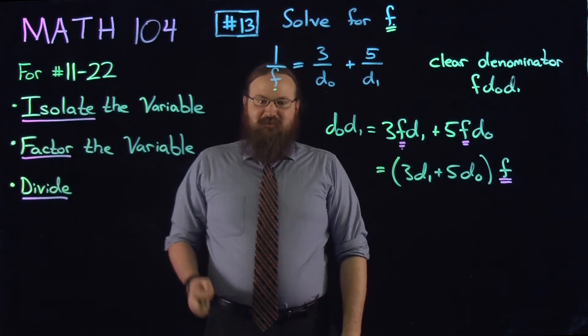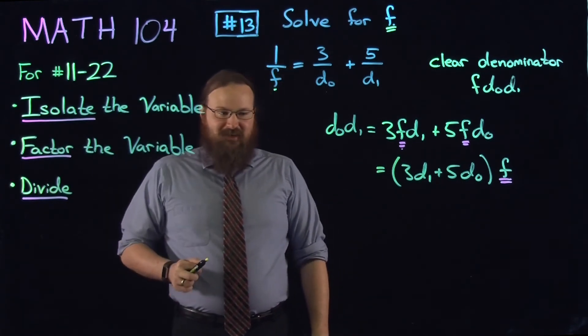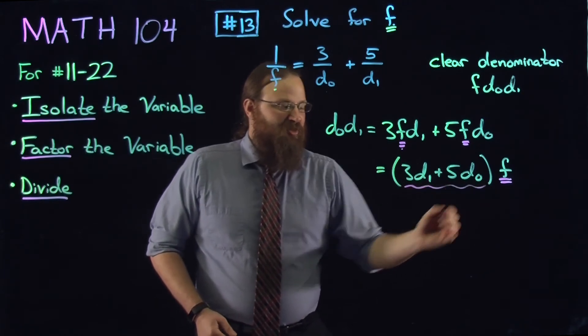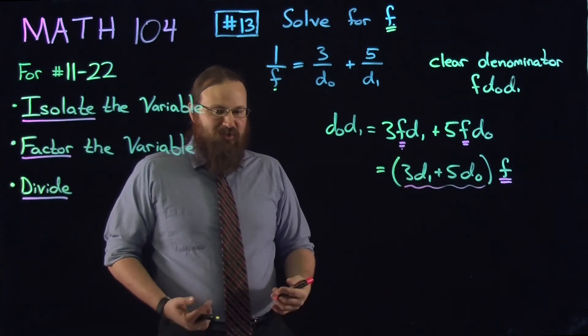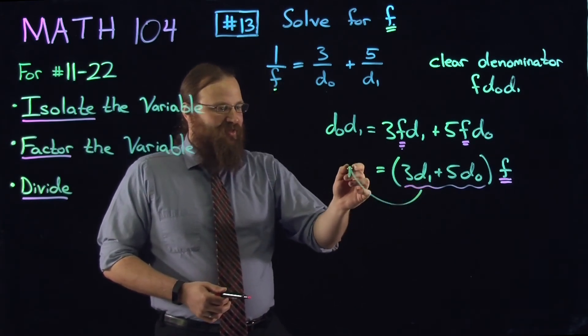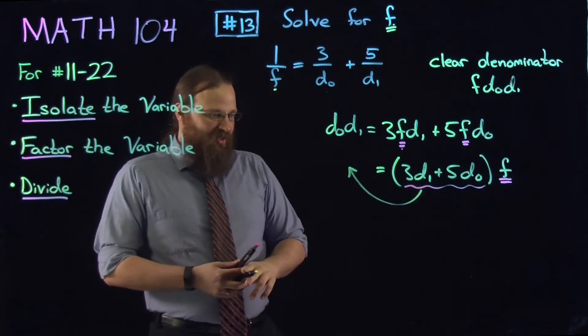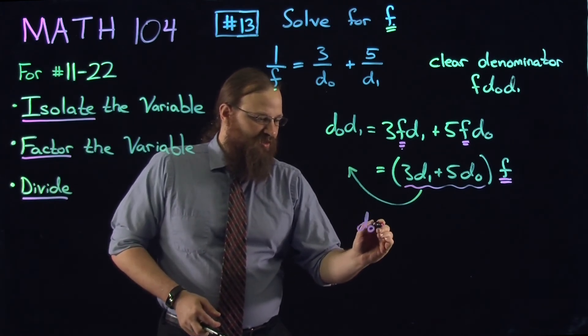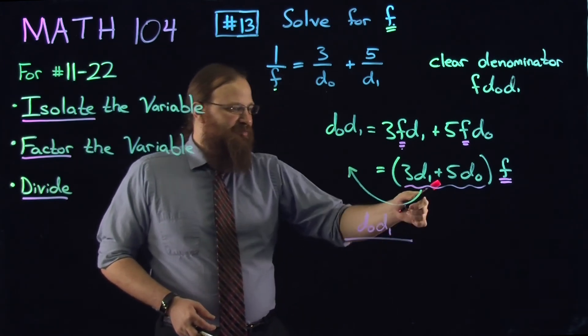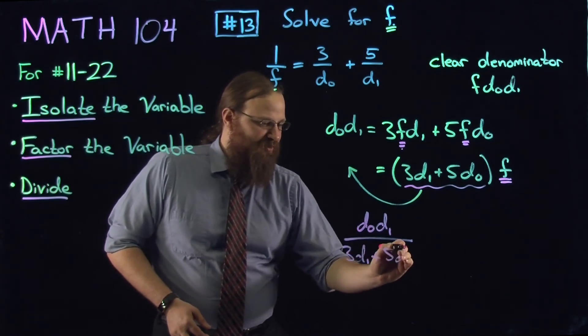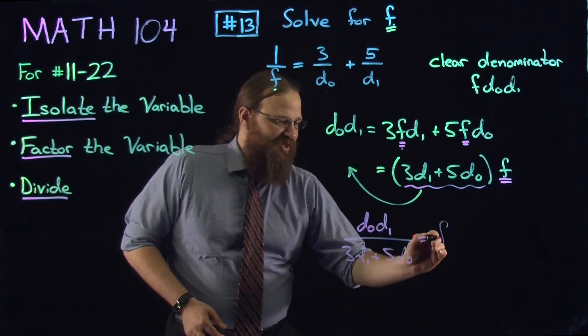So we've factored the variable. Now we're going to divide. We're going to divide by the term or the factor that is not including f. So we'll divide to the left-hand side. And let's rewrite this. This is d0, d1, divided by 3d1, plus 5d0, and all of this is equal to f.